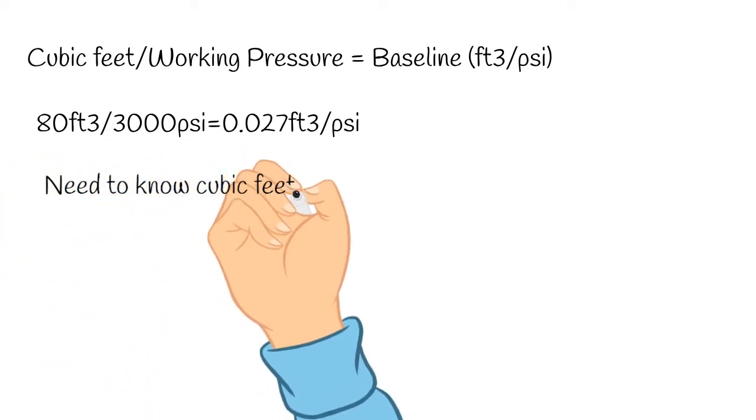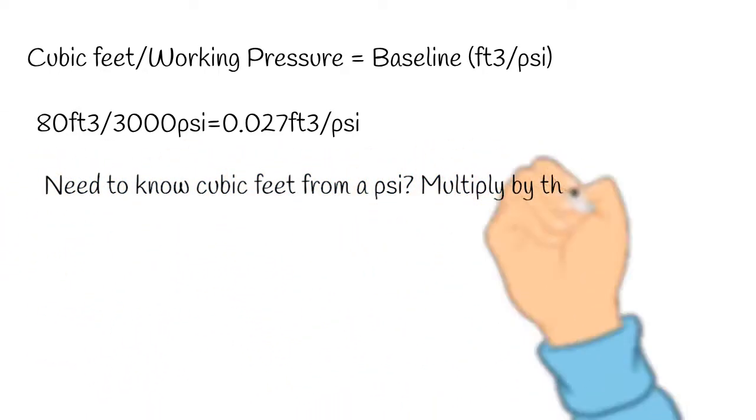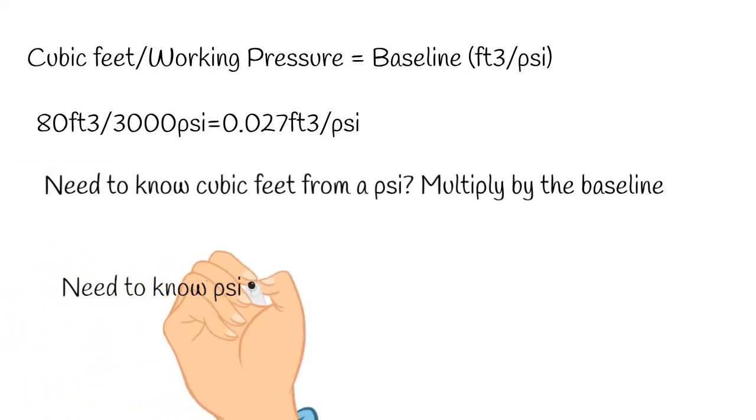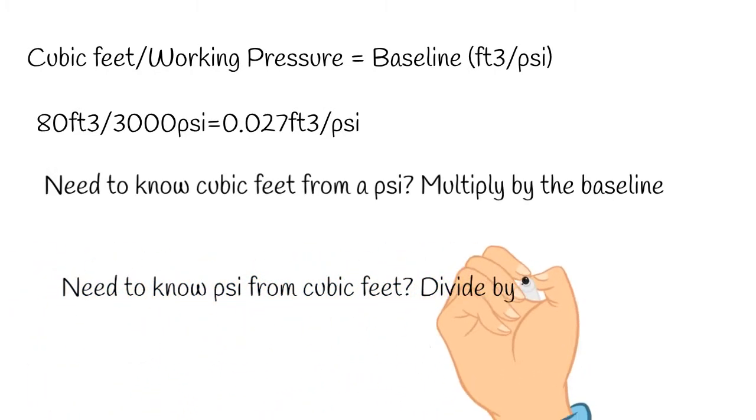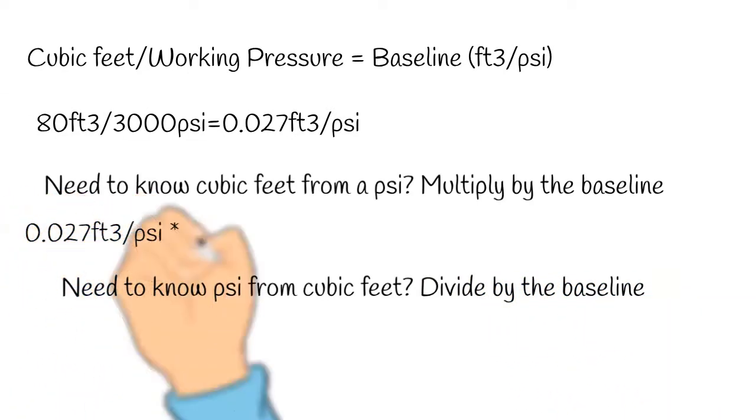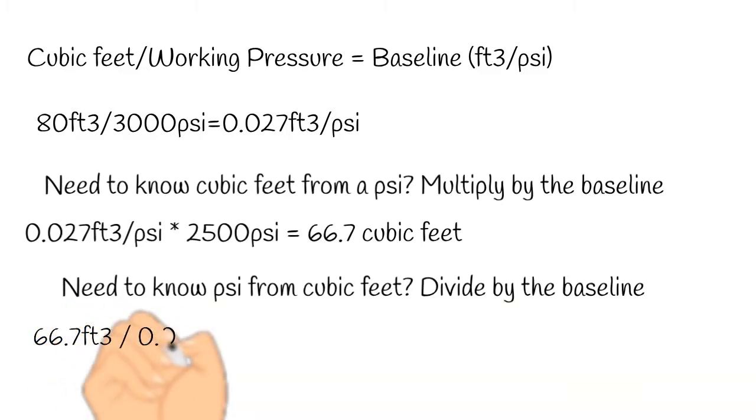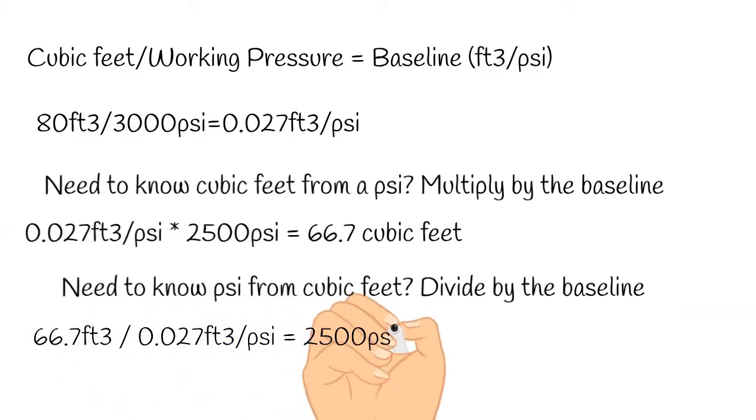If we have doubles, we'll actually multiply that by two. But for a single cylinder, if we know a psi and we need to know cubic feet, we just multiply by that baseline. If we know cubic feet and we need to know a psi, we divide by the baseline. So that example earlier, 2500 psi - what is that? 66.6 repeating cubic feet, rounded here to avoid Satan. And the opposite of that, if we take 66.7 divided by the baseline, we figure out it's 2500 psi.